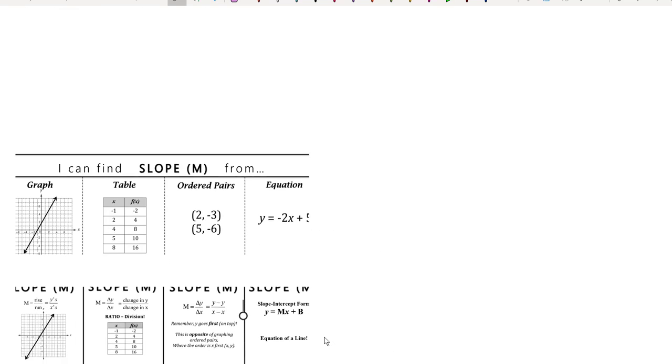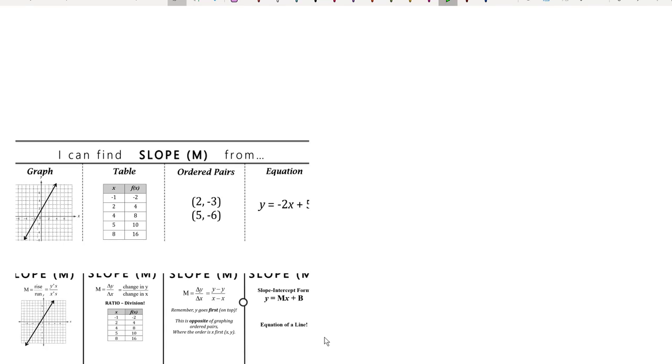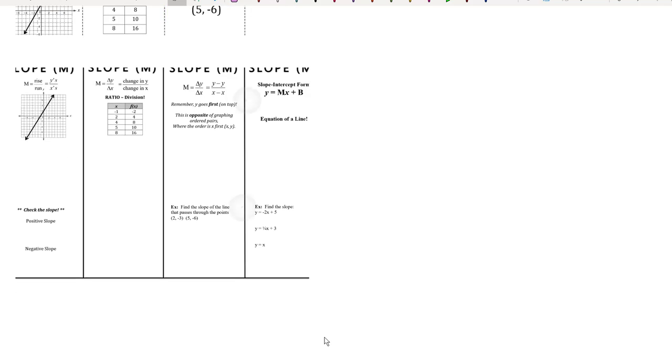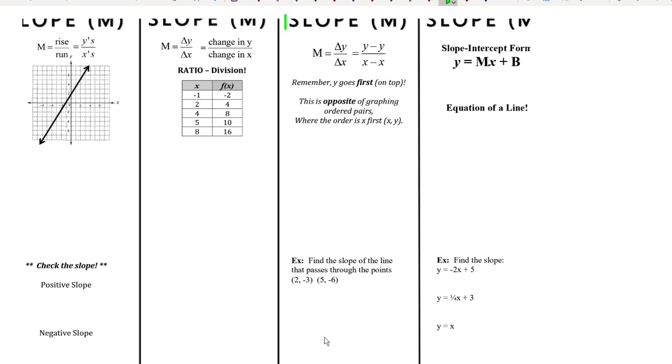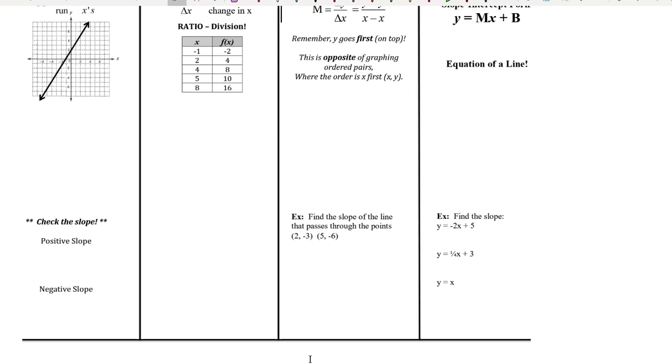So to find slope from ordered pairs, we're going to open it up on the inside. We're in this segment today, right now. And I'm just going to show you again in the example down here in the bottom.